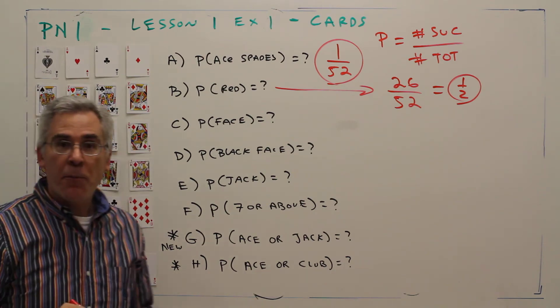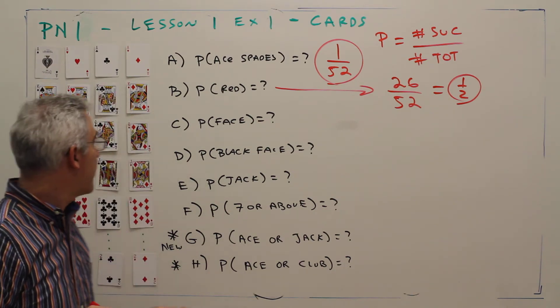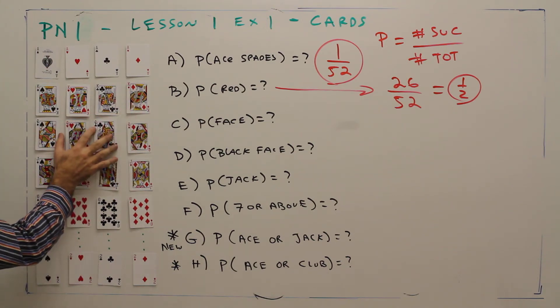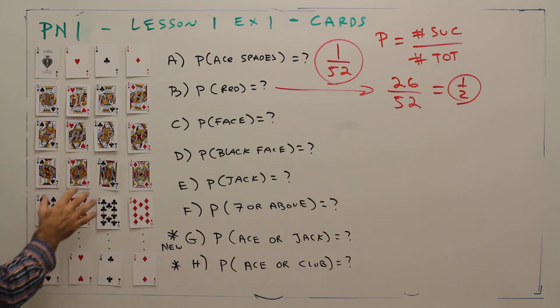Part C: probability of selecting a face card. The face cards are the cards with faces on them: Jacks, queens, and kings. So there's four, eight, twelve face cards.